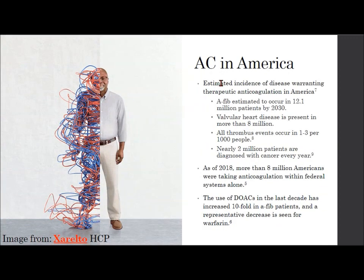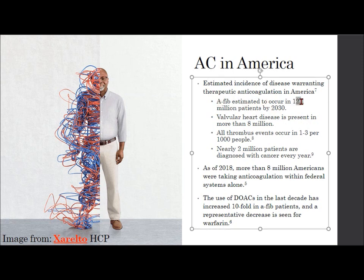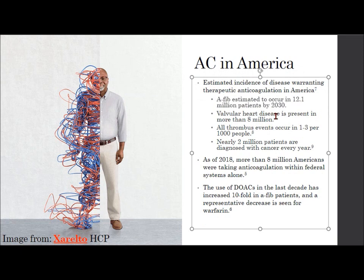Looking at anticoagulation in America, there's a significant population we're talking about. AFib is estimated to occur in 12.1 million patients by 2030. Valvular heart disease is present in more than 8 million current Americans. All thromboembolic events occur in 1 to 3 per 1,000 people, and tons of people get cancer every year — so a big patient population. Within federal systems alone in 2018, there were more than 8 million Americans on therapeutic anticoagulation. DOAC usage has increased substantially over the last decade — specifically in AFib, we see a tenfold increased use and a representative decrease in warfarin.